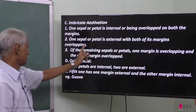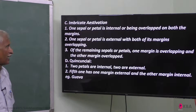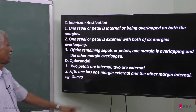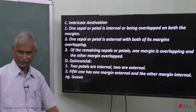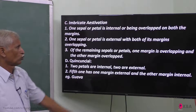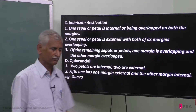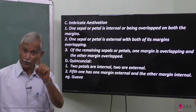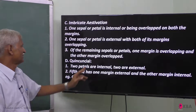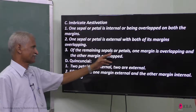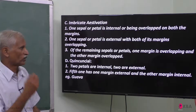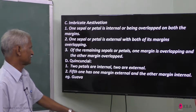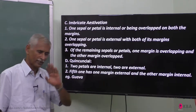That is Imbricate aestivation. Of the remaining sepals or petals, one margin is overlapping and the other margin is overlapped. In the remaining sepals or petals, one margin is overlapping and the other margin is overlapped.